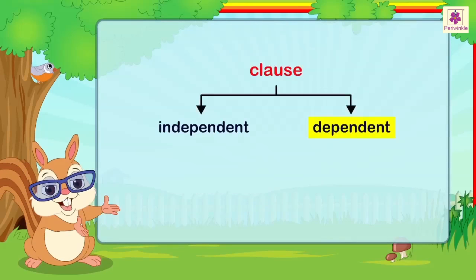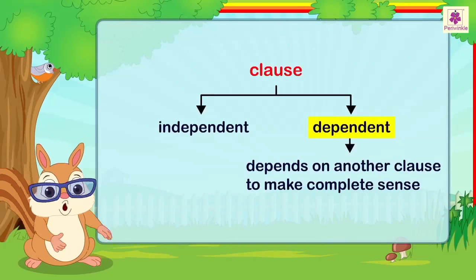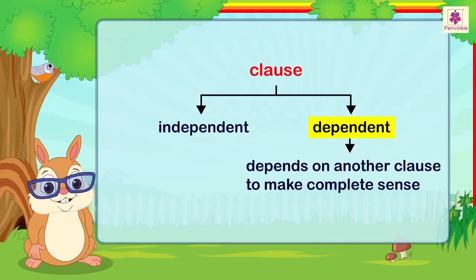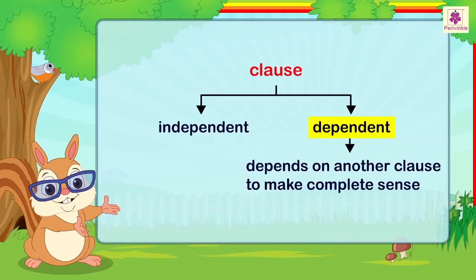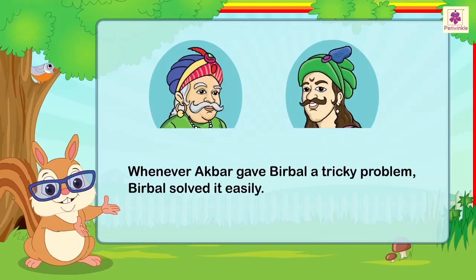A dependent clause depends on another clause to make complete sense. For example, 'Whenever Akbar gave Birbal a tricky problem, Birbal solved it easily.'